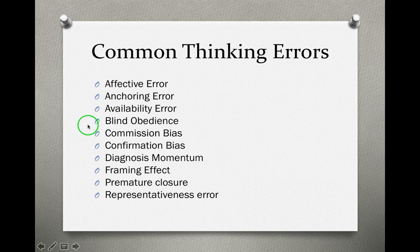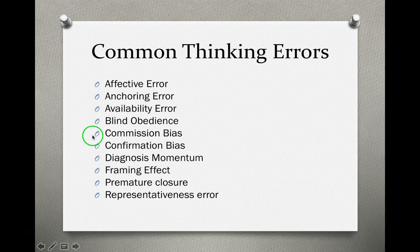Blind obedience is just doing what an authority figure might say — like, you just have to make the diagnosis, we need to make sure they get access to services — without looking at all the information if it's not warranted. Commission bias is just doing something, anything — I don't know, I'm just going to go ahead and make a diagnosis without looking at all of the information.